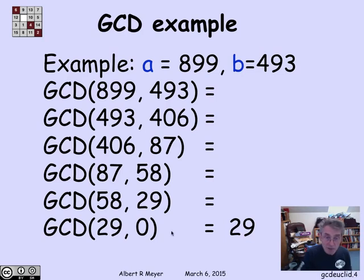And this is quite a fast algorithm because I keep dividing the numbers that I have by each other and it gets small fast. We'll be more precise about that in a minute.